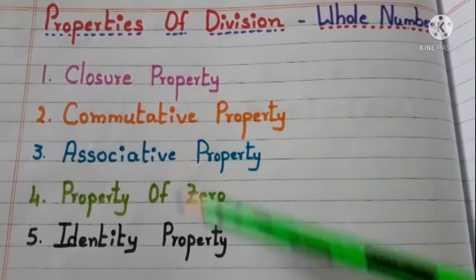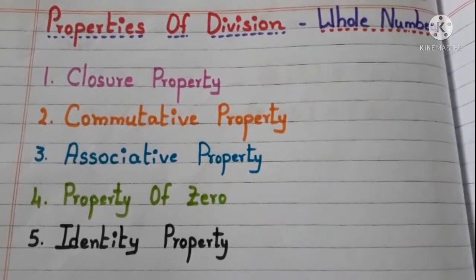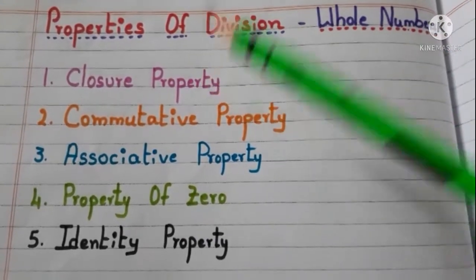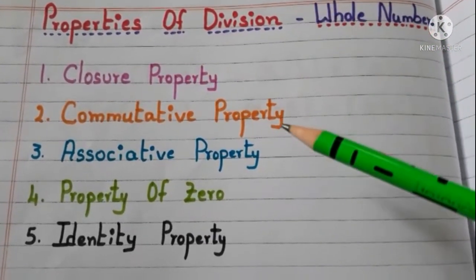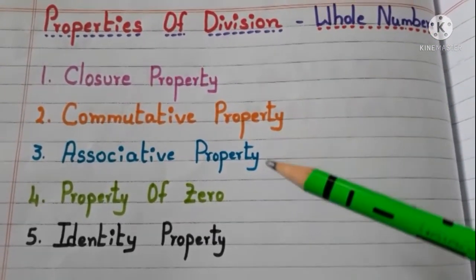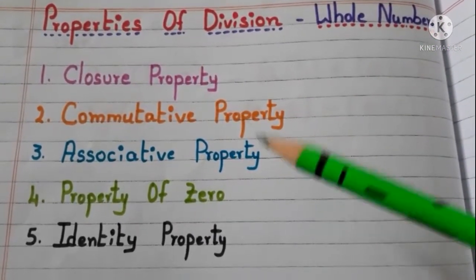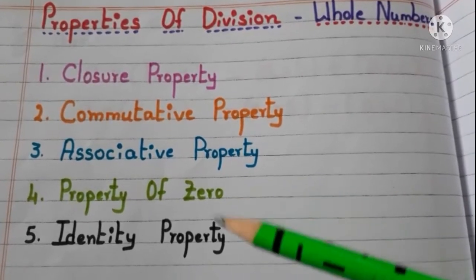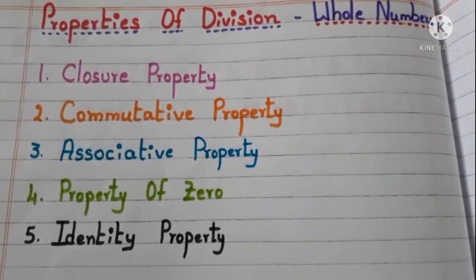We have 5 properties of division: closure property, commutative property, associative property, property of zero, and identity property.